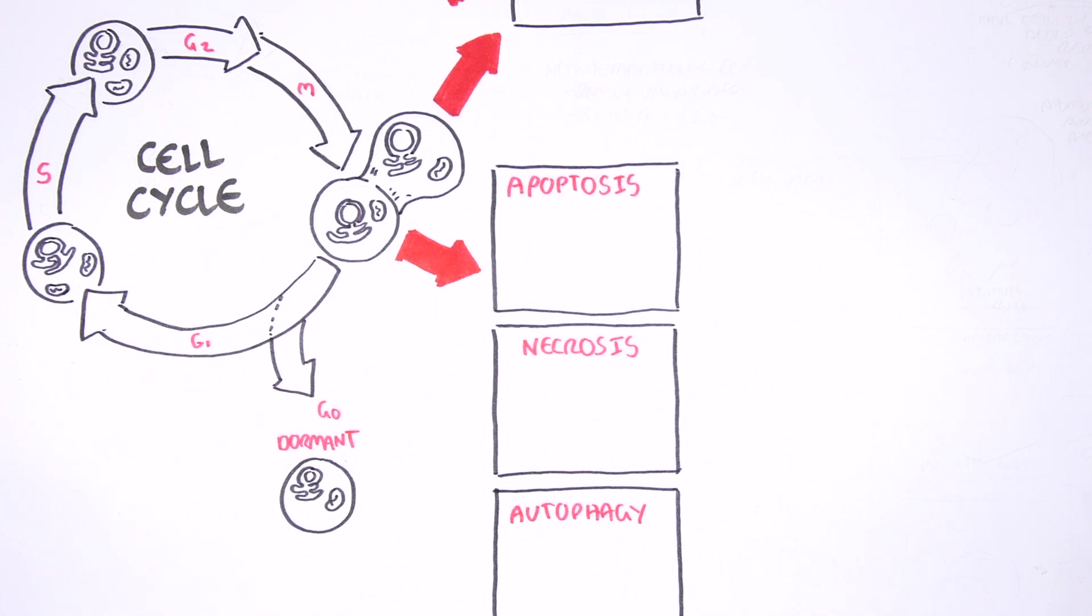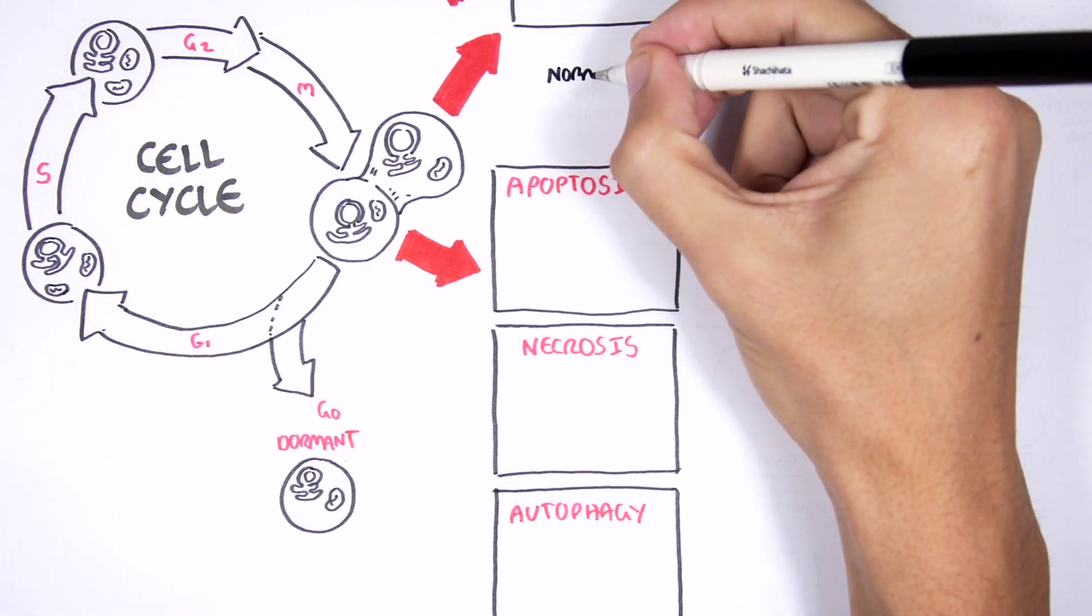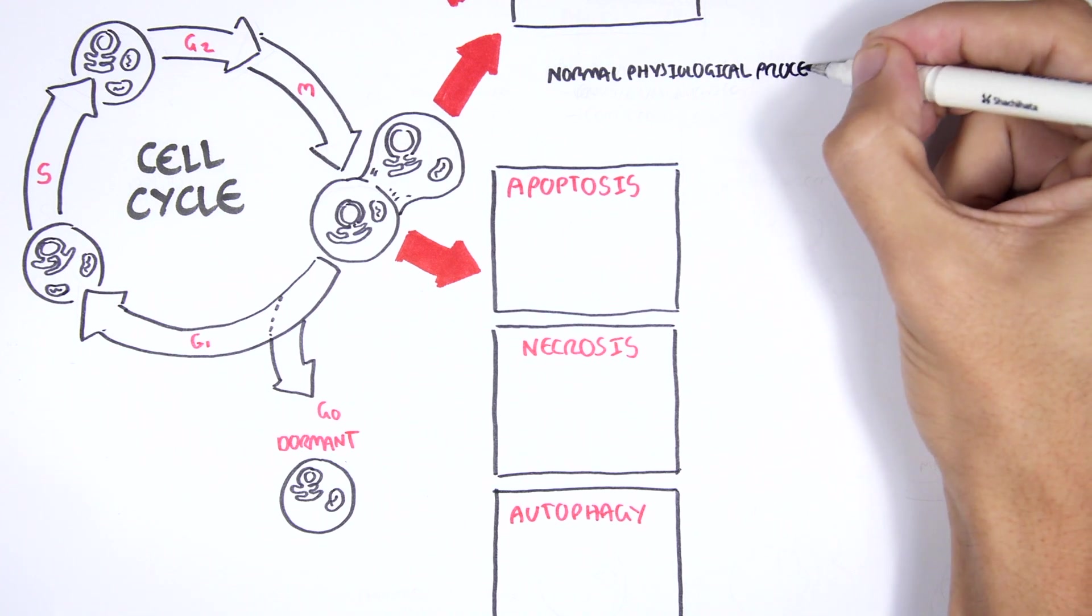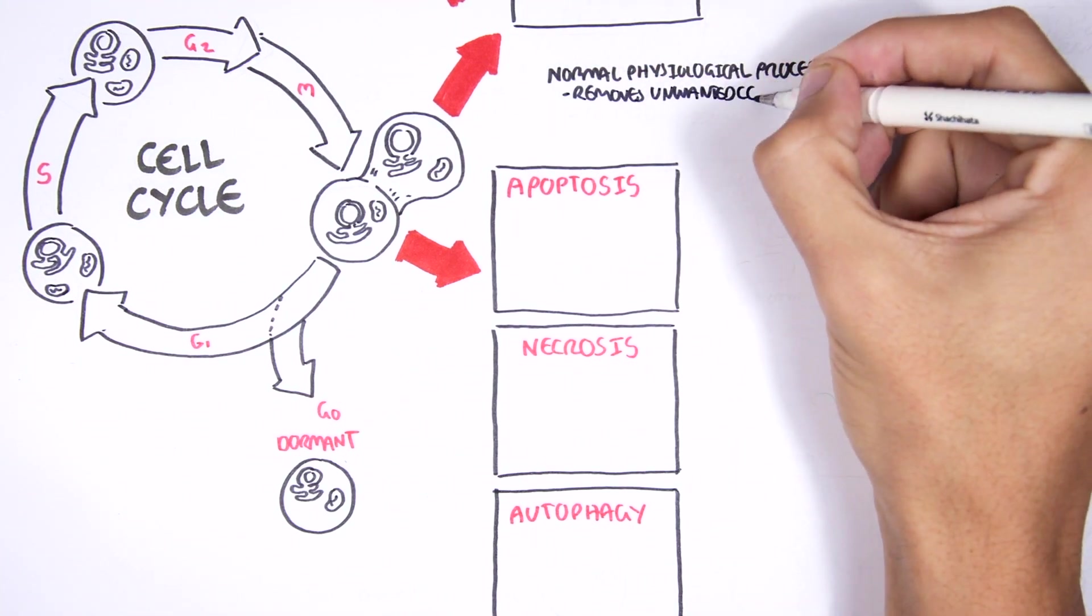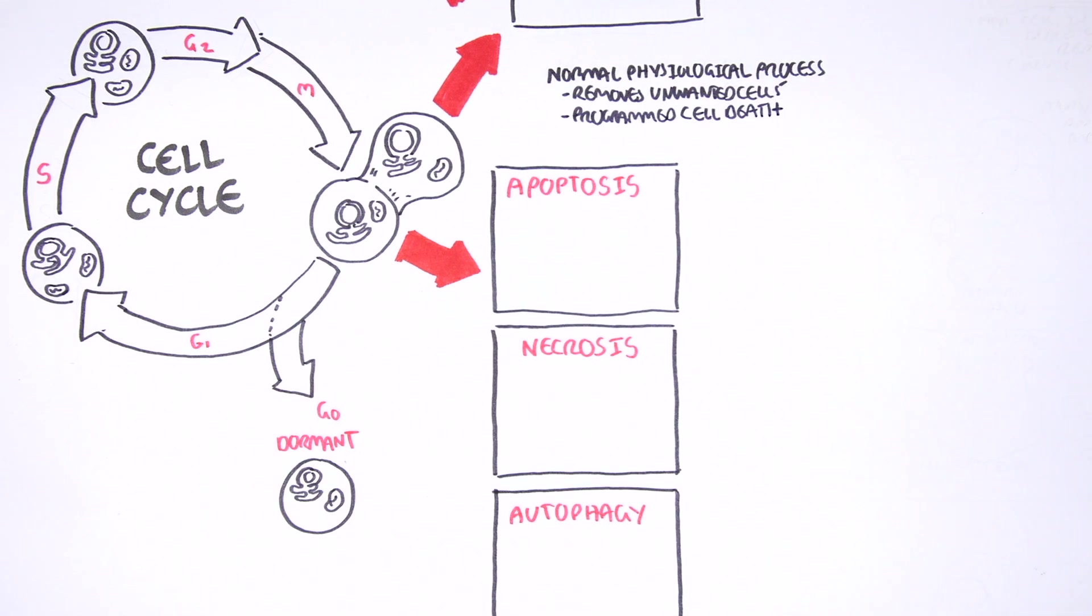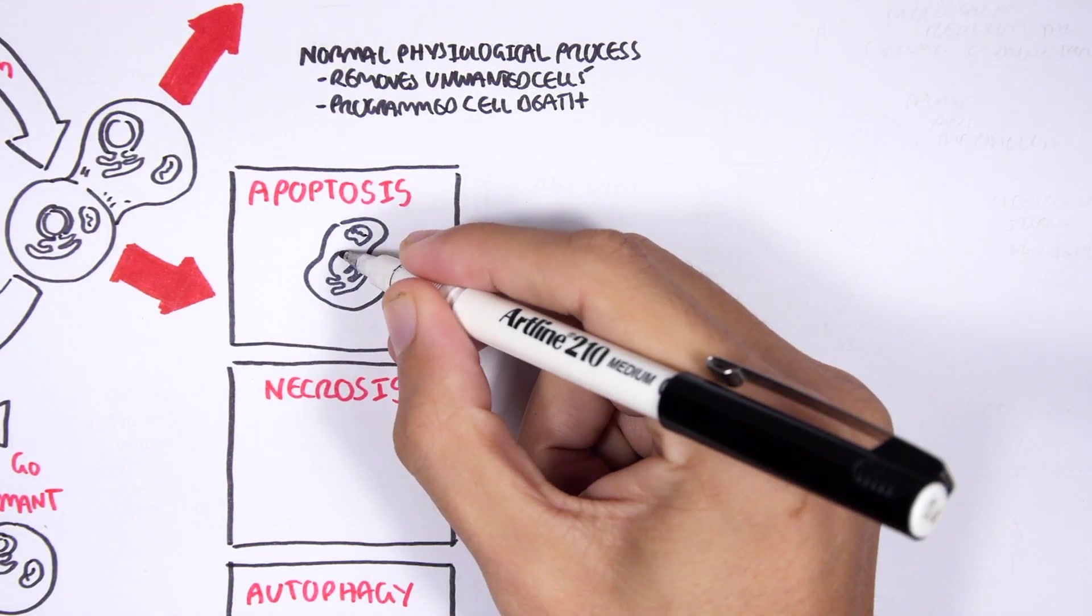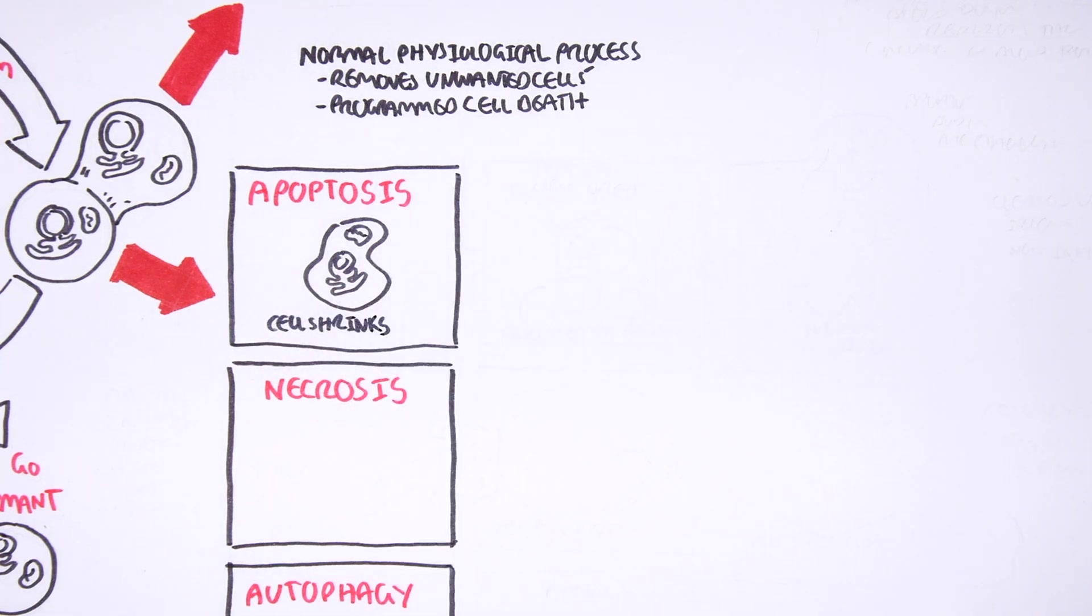Now let's look at each one of these three and look at what they're all about. So apoptosis is essentially a programmed cell death. It's a normal physiological response which removes unwanted cells. It's programmed cell death.